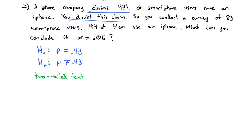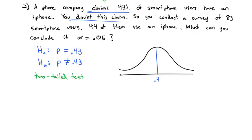A two-tailed test means we could reject the null hypothesis if the proportion is bigger or if it's smaller — either direction. Here's the normal curve for the proportion. The claim is that the mean, the proportion, is 0.43. But we doubt that's true — we think it's either going to be lower, somewhere in the red tail on the left, or higher, somewhere in the red tail on the right. We don't know which side; we just doubt it. It's in both tails, left and right.